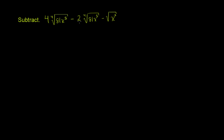We're asked to subtract all of this craziness over here. And it looks daunting, but if we really just focus, it actually should be pretty straightforward to subtract and simplify this thing. Because right from the get-go, I have 4 times the 4th root of 81x to the 5th, and from that, I want to subtract 2 times the 4th root of 81x to the 5th.